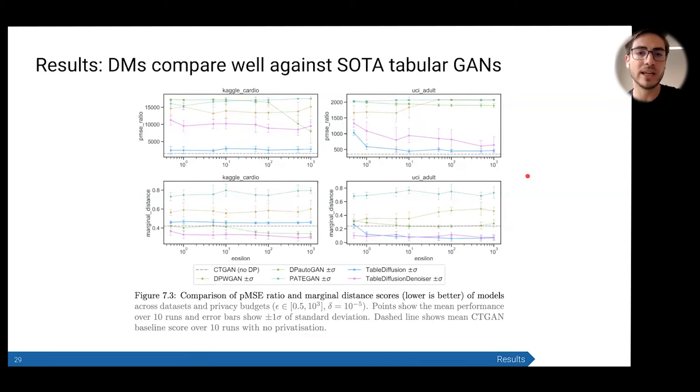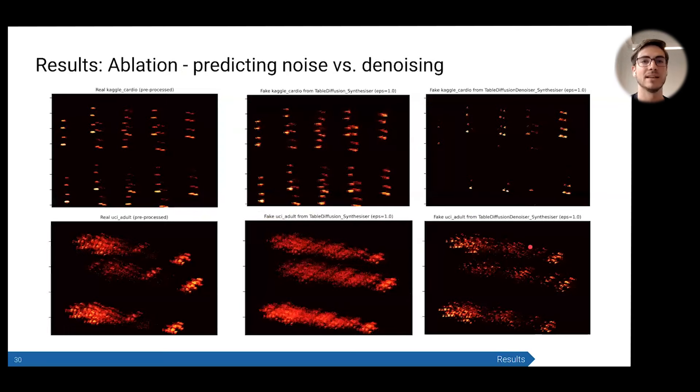Overall, here you can see these are all the minimized metrics that we discussed earlier. The diffusion models, again, in blue and pink, compare really well to the state-of-the-art tabular GAN models. They're consistently outperforming across the different privacy levels and often outperforming the unprivatized benchmark of CTGAN, which is that gray dotted line, even sometimes at very strict privacy levels. I was quite amazed by this. This is a really strong result. It just shows the power of diffusion models compared to GANs.